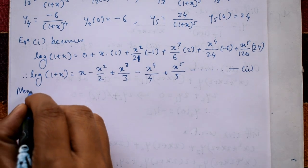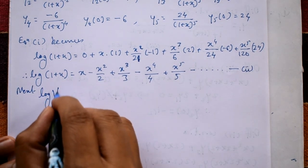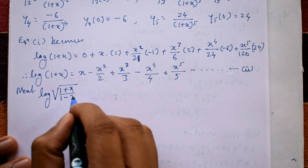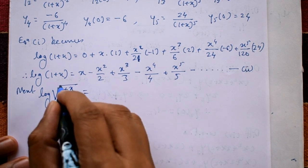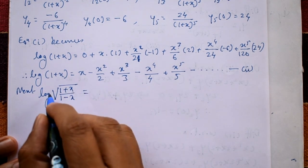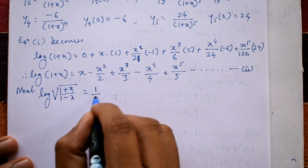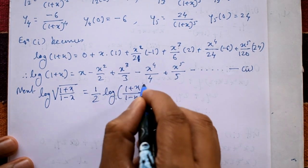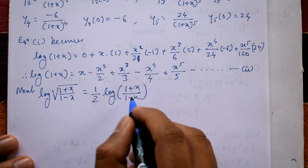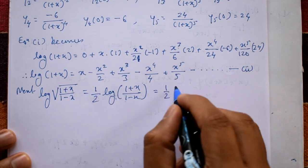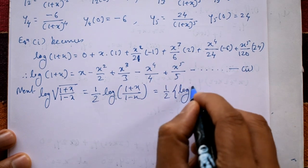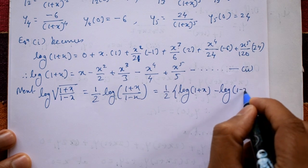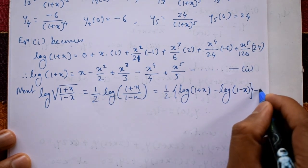Next, deduce log of the square root of (1+x)/(1-x). Since square root means raised to the power ½, using log properties this equals ½ · log[(1+x)/(1-x)] = ½ · [log(1+x) − log(1-x)]. Call this equation number 3.